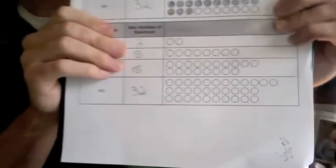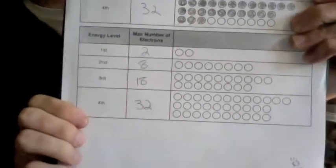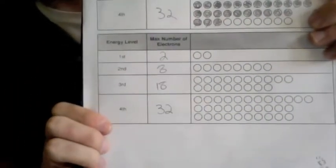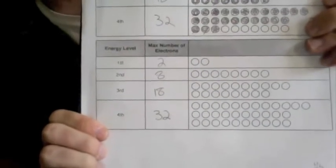What basically these charts are, are ways for you to arrange the electrons. Remember electrons don't like being near each other because they have a negative charge but they want to be as close to the nucleus as possible.